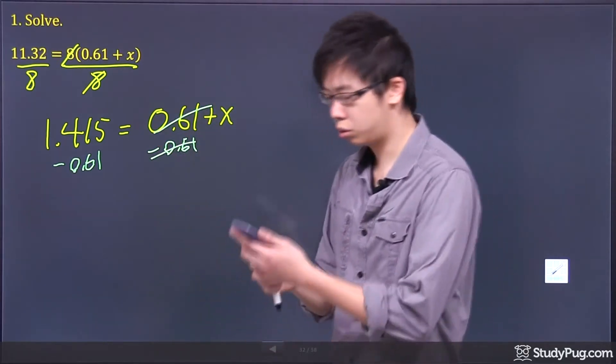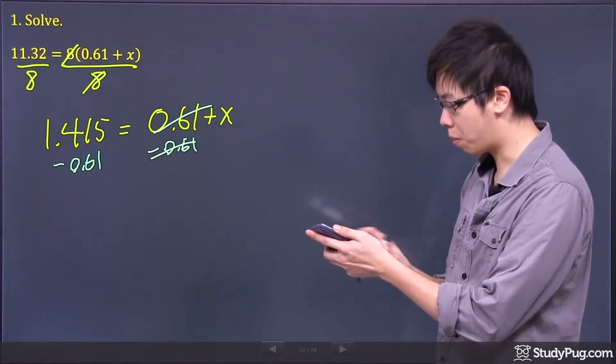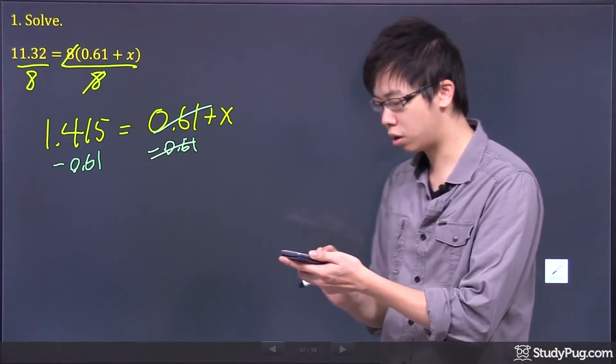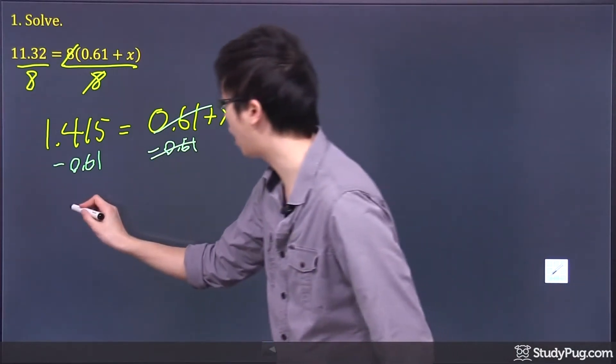What happened is that got cancelled. So you take your 1.415 and minus 0.61, you get 0.805.